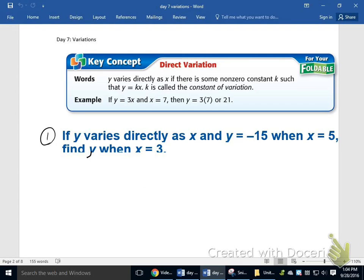The first part is actually what should be a review from Math 1, talking about direct variations. Direct variations occur when y equals kx, and k is a constant of variation. k will always be a number that we'll be able to find.